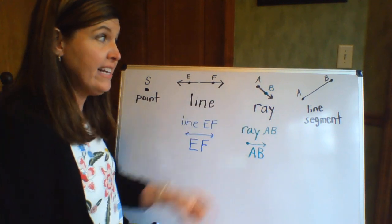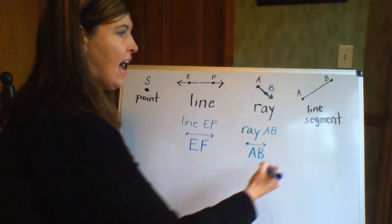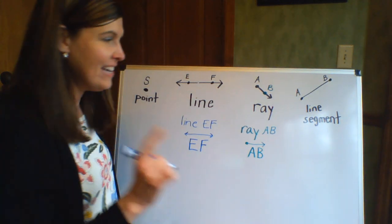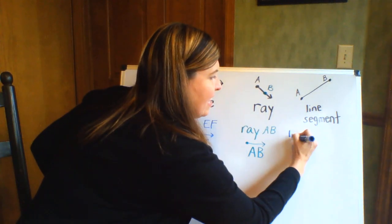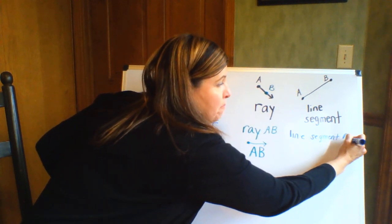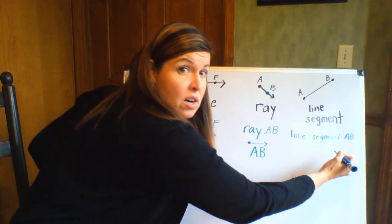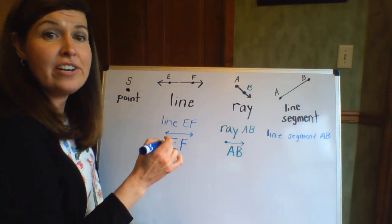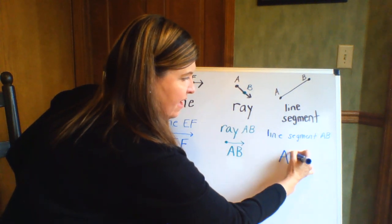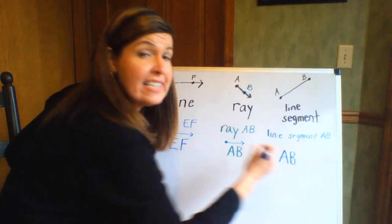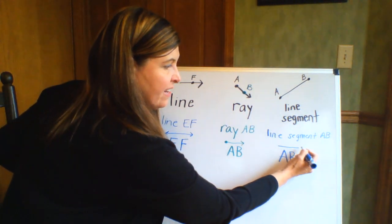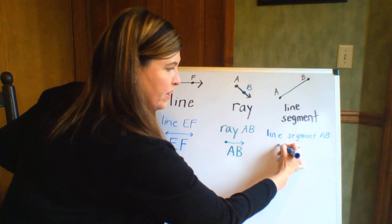Now if I wanted to write this line segment, I could say—how can I do it? You know already. I could write line segment AB, or what I could do is I could actually write the points AB and then write the symbol for a line segment above it, which would be a line that has those endpoints.